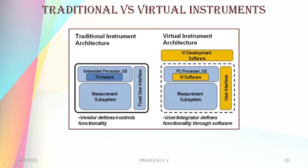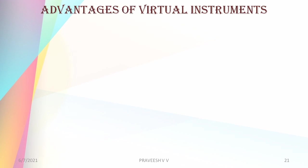Looking at the traditional instrument architecture, we have a measurement subsystem, a fixed user interface, and an embedded processor with OS or firmware. On the right, the virtual instrument architecture has a PC processor with PC OS, embedded processor, VI software, measurement subsystem, and user interface. The key difference is that in the traditional environment the vendor defines the functionality, while in the VI environment the user defines the functionality through software.